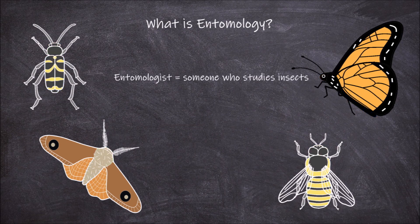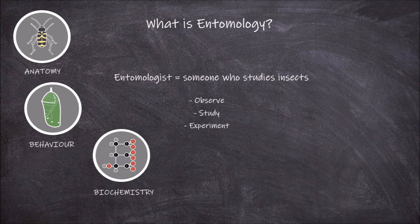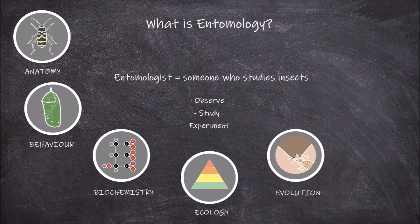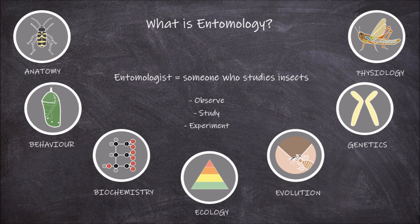An entomologist is someone who studies insects. These individuals observe, study, and do experiments that involve insects. The study of insects can cover many fields of biology including anatomy, behaviour, biochemistry, ecology, evolution, genetics, and physiology. In all these fields the focus is on insects in relation to that field. For example, for behaviour, an entomologist would be studying the behaviour of an individual insect, a group of insects, or the interactions of insects with other animals.